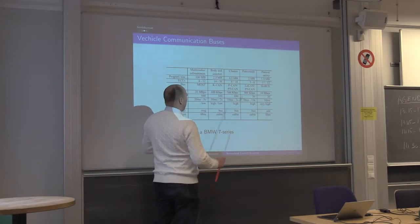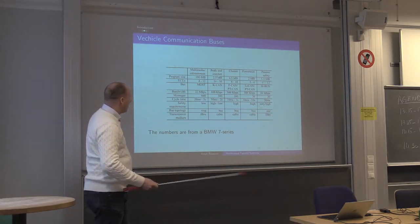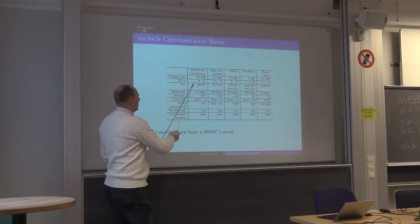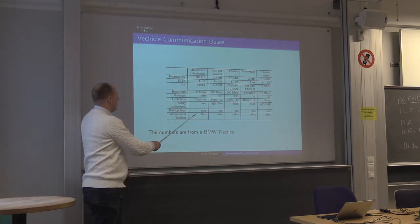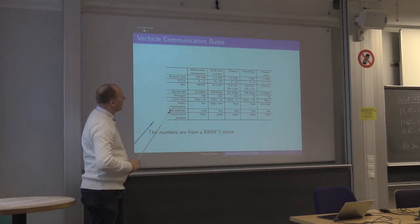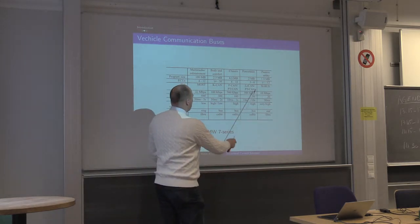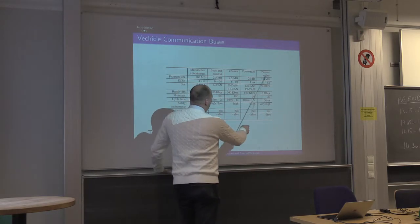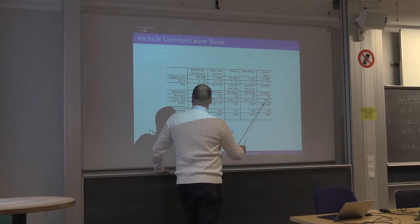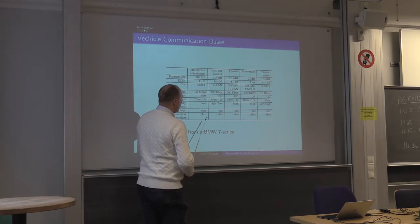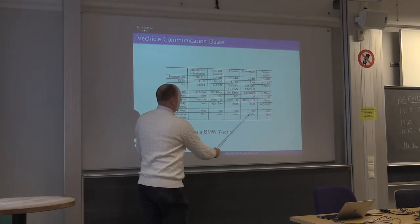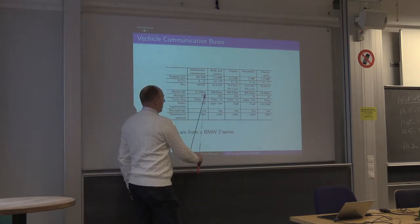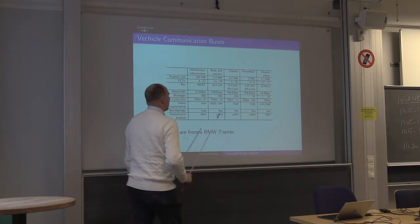It can be three or five different buses. For the BMW 7 Series, they have five different buses. The multimedia bus uses its own protocol called MOST, based on fiber communication. For the powertrain, there is a version of a CAN bus. For passive safety, there is another bus with very high safety requirements. Some use fiber connections and others copper cables. You can see the difference in bandwidth: for MOST you have 22 megabits, and for the powertrain system 500 kilobits per second.